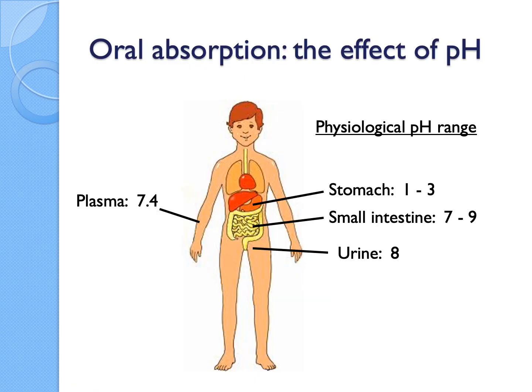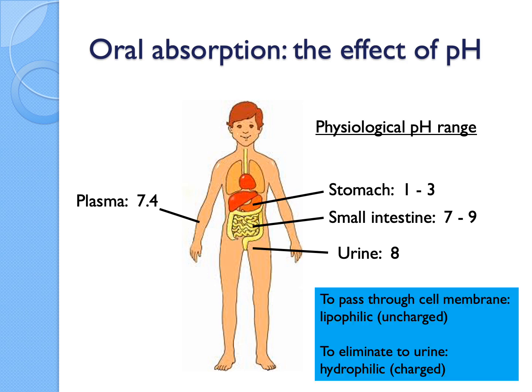Oral absorption is affected by the pH of the different sections of the GI tract. The plasma pH is around 7.4, the stomach is between one to three depending on the amount of acid secreted, the small intestine is about seven to nine, and urine is about eight. So the whole section besides the stomach is mainly on the alkaline side. The main concept is that we want something to be uncharged for the molecule so that it's more lipophilic and can go through the cell membrane more easily.